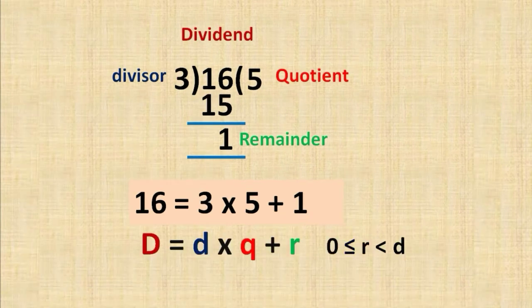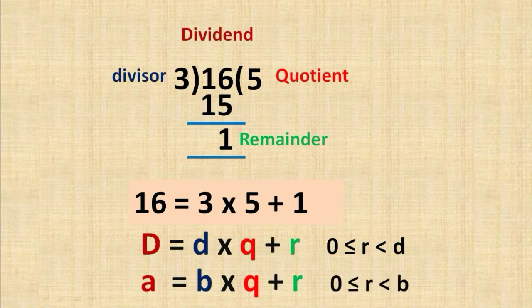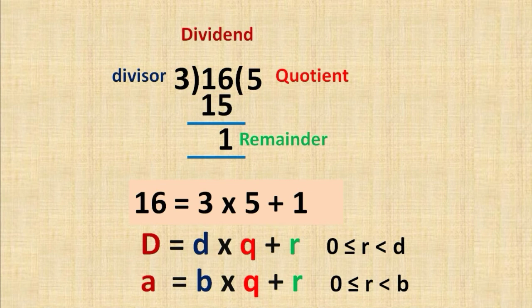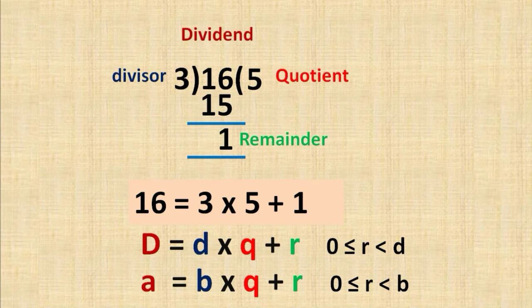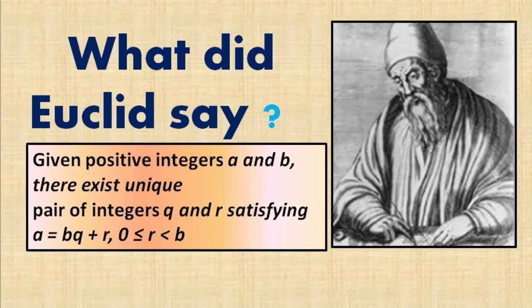We name capital D as A, and small d as B. So A equals BQ plus R, and 0 is less than or equal to R which is less than B. This is why it's called Euclid's division lemma. The formula is A equals BQ plus R, where R value is less than divisor B.